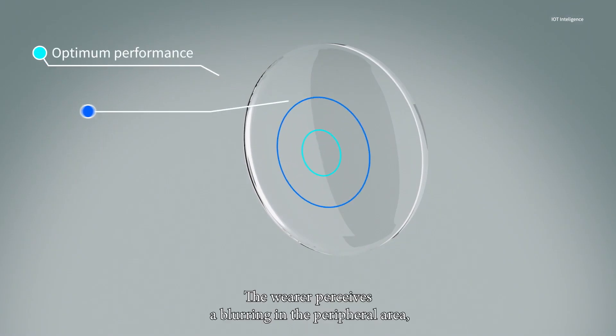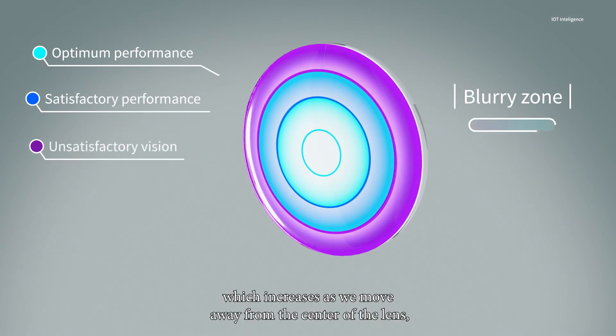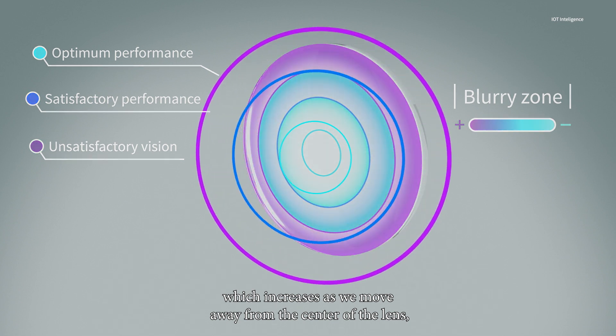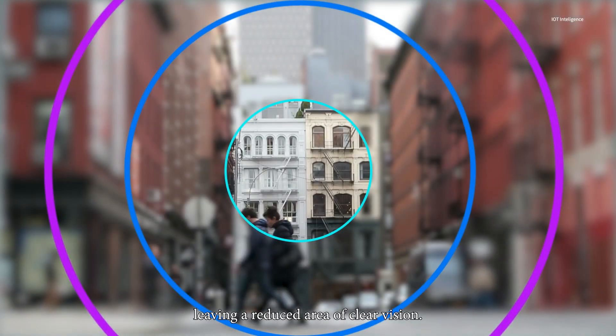The wearer perceives a blurring in the peripheral area which increases as we move away from the center of the lens, leaving a reduced area of clear vision.